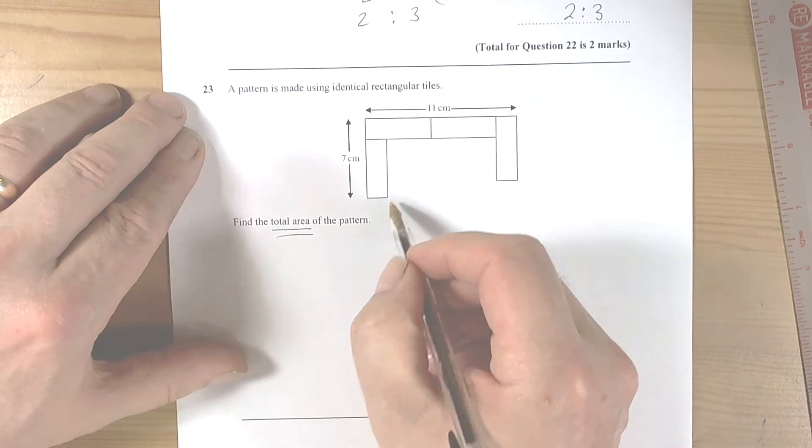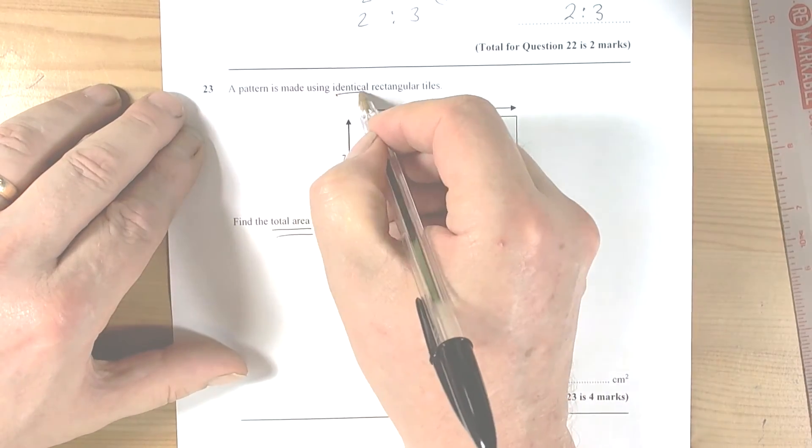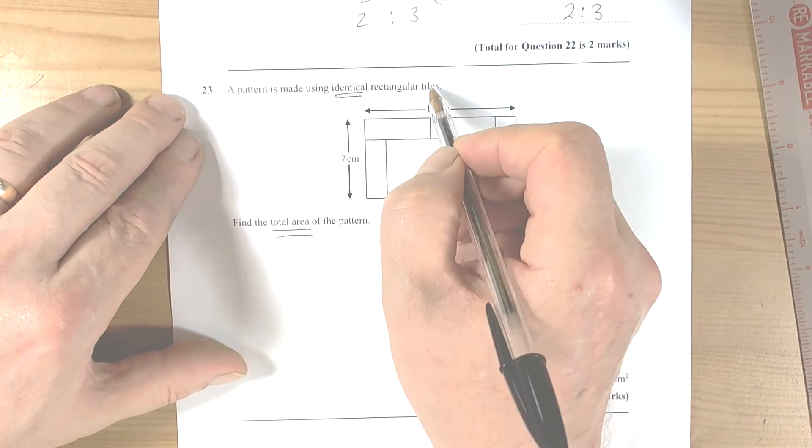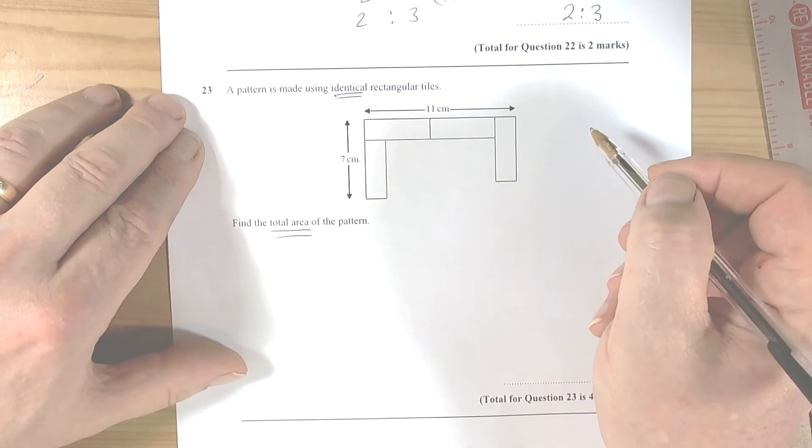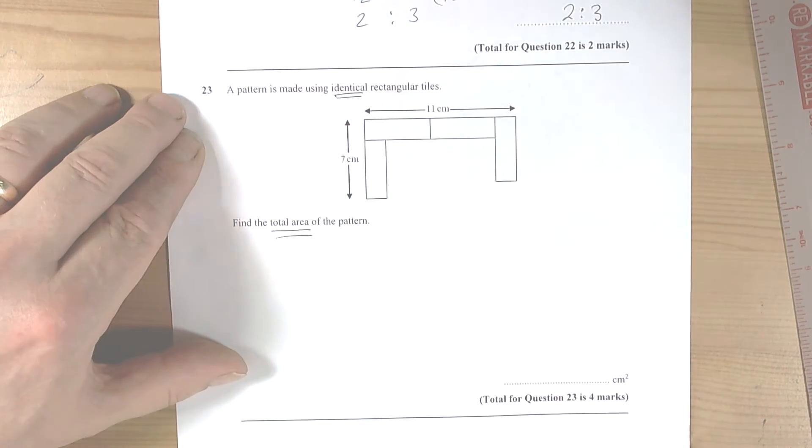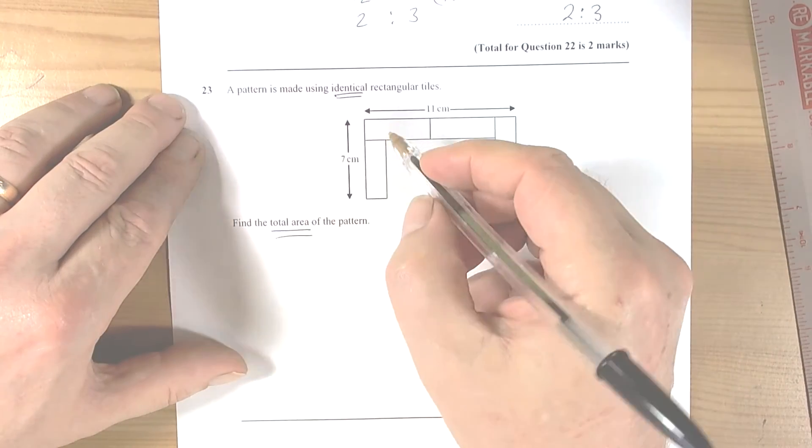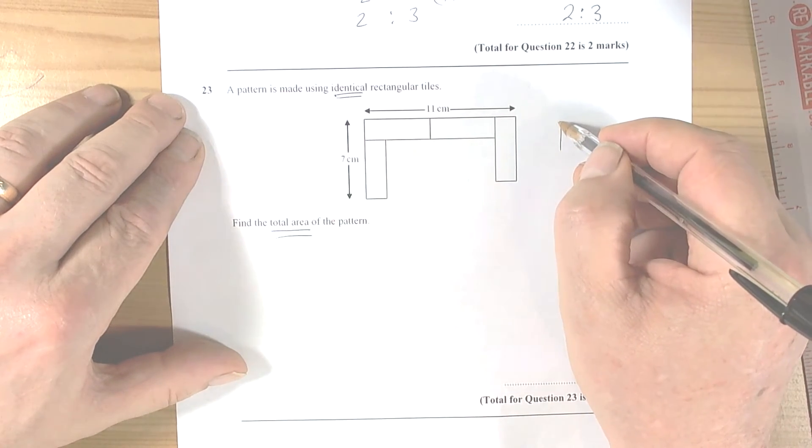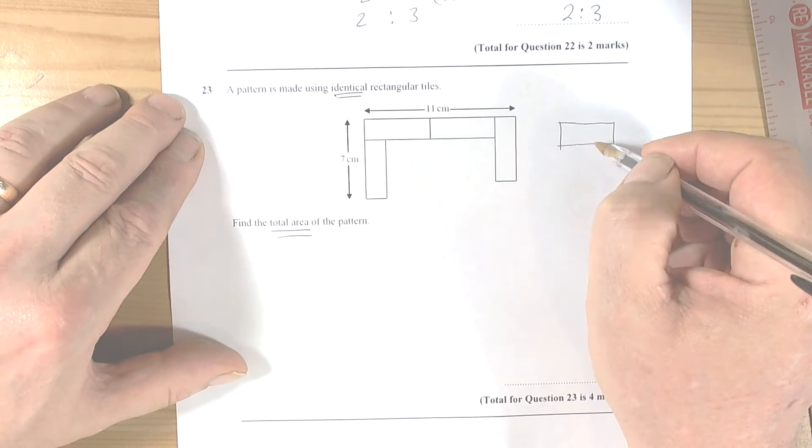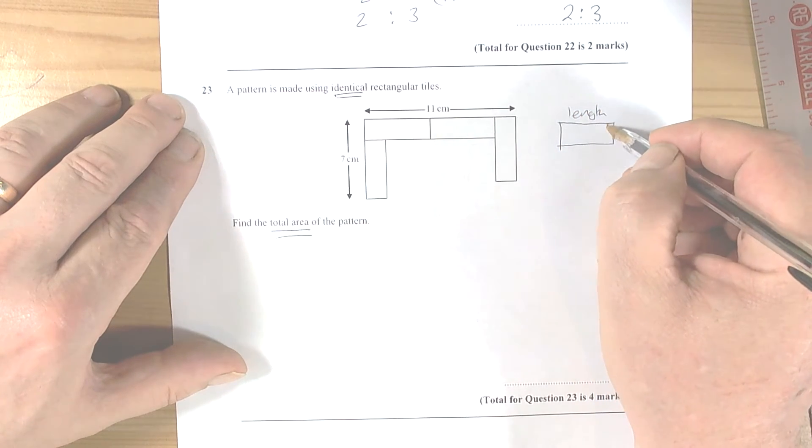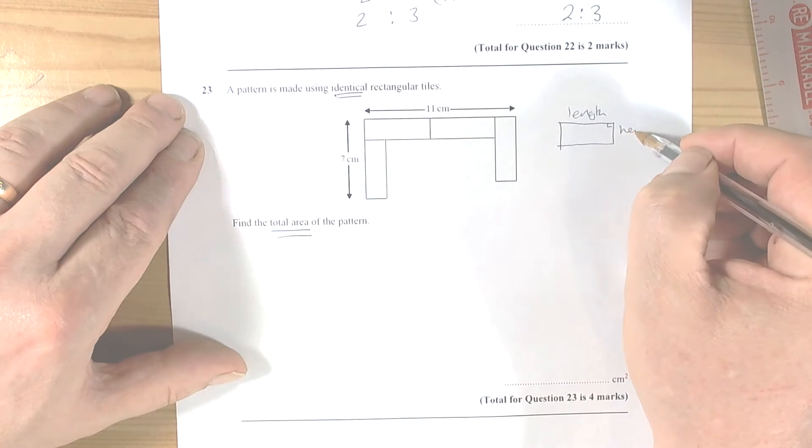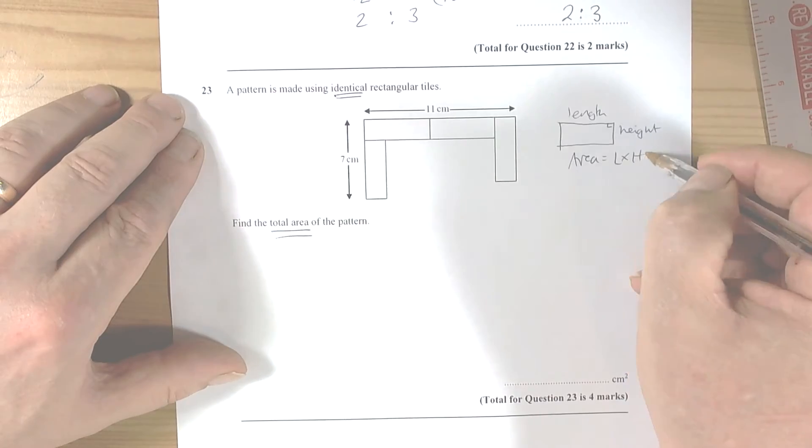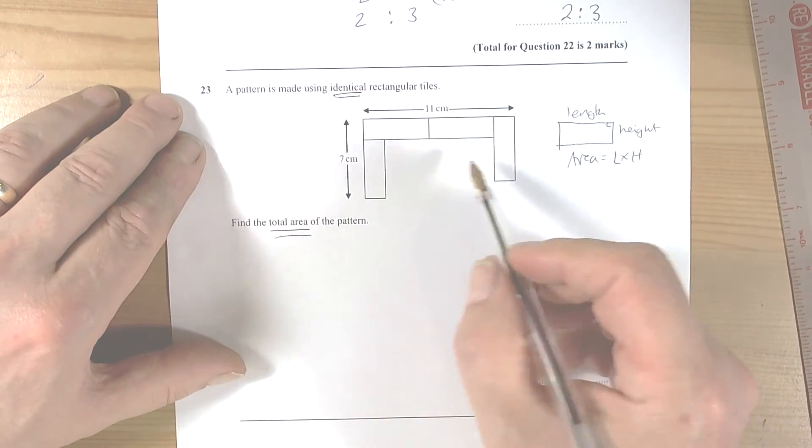This question asks you to find the total area of the pattern made, and again identifying key information. What do we know? We know that they're identical rectangular tiles, so each of these have got exactly the same lengths and widths. So we've got to try and work out the area. So we know that the area is equal to the length times the height, so we're going to try and find the length and width of each of these rectangles.